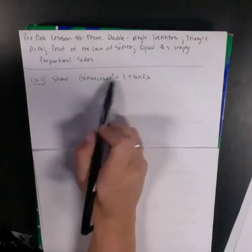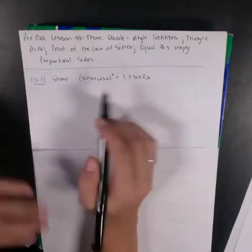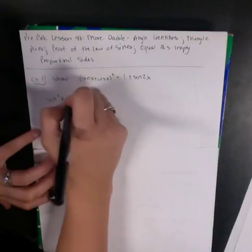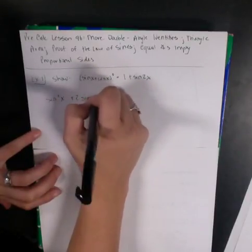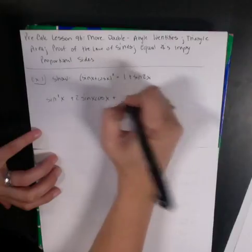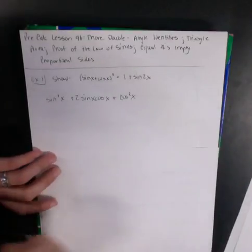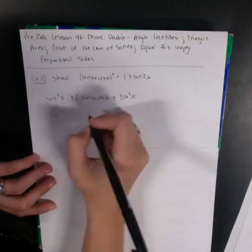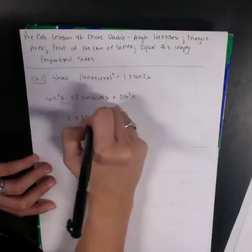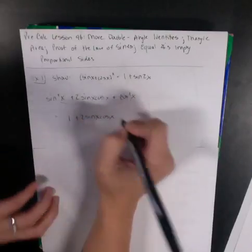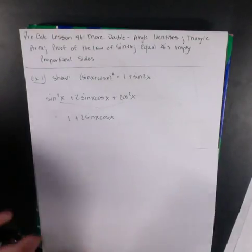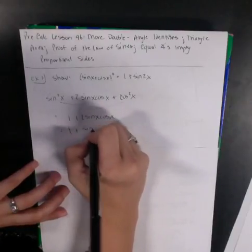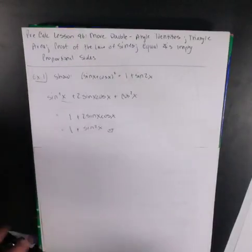We want to show that (sine x + cosine x)² equals 1 plus 2 sine x. So I'm going to square this out. I get sine squared x plus 2 sine x cosine x plus cosine squared x. Since sine squared plus cosine squared is 1, I get 1 plus 2 sine x cosine x. And I already have an identity that says 2 sine x cosine x is sine of 2x. Done!